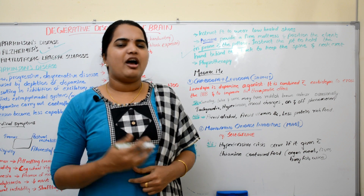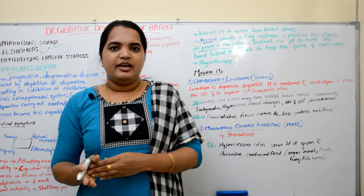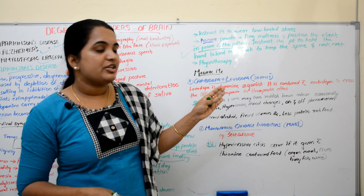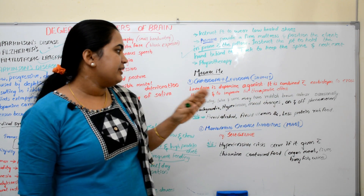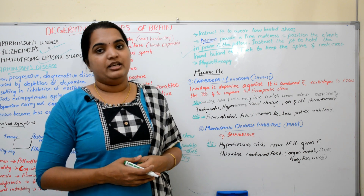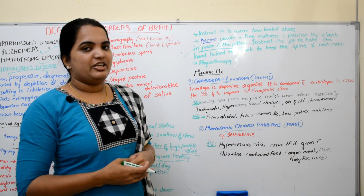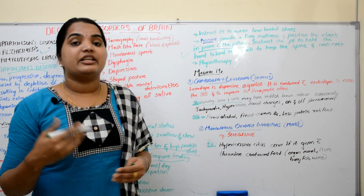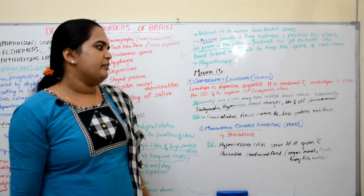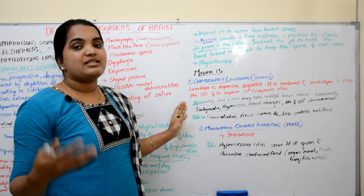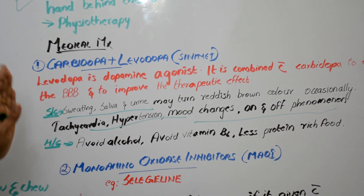For medical management, the main medication is carbidopa plus levodopa (Sinemet). Levodopa is a dopamine agonist. Carbidopa crosses the blood-brain barrier to improve the therapeutic effect of levodopa — that is why they are given together. Side effects include excessive sweating, reddish discoloration of saliva and urine, tachycardia, hypertension, and mood changes (on-off phenomenon).